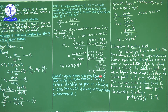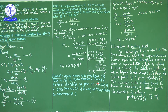Problem 2: The vapor pressure of pure liquid A is 10 torr at 27 degrees Celsius. The vapor pressure is lowered to 9 torr on dissolving 1 gram of B in 20 grams of A. If the molar mass of A is 200 grams per mole, calculate the molar mass of B.